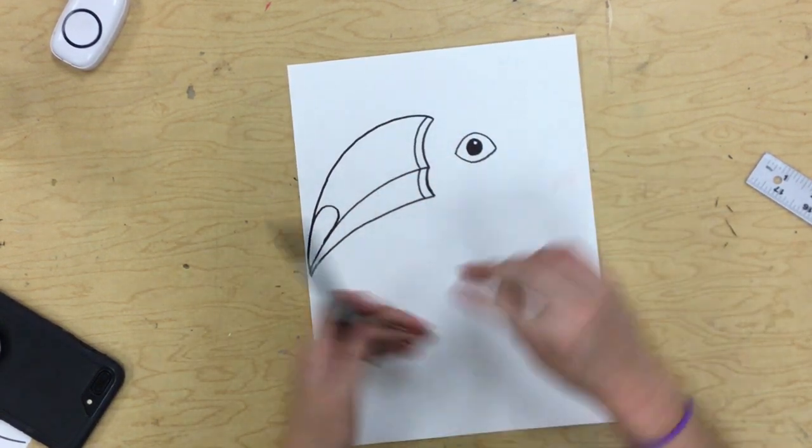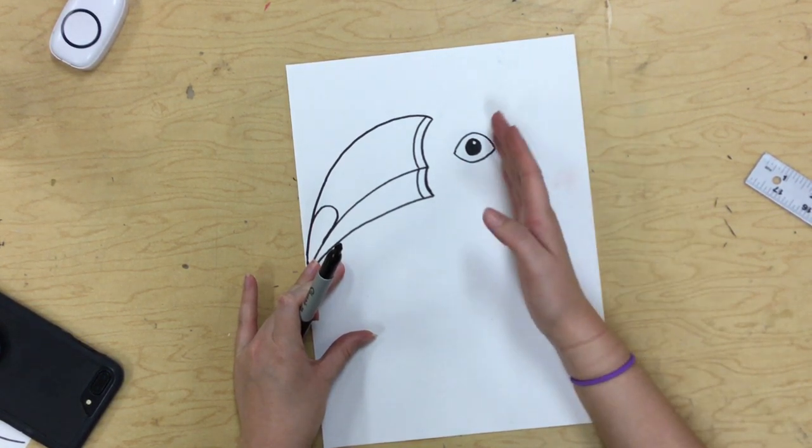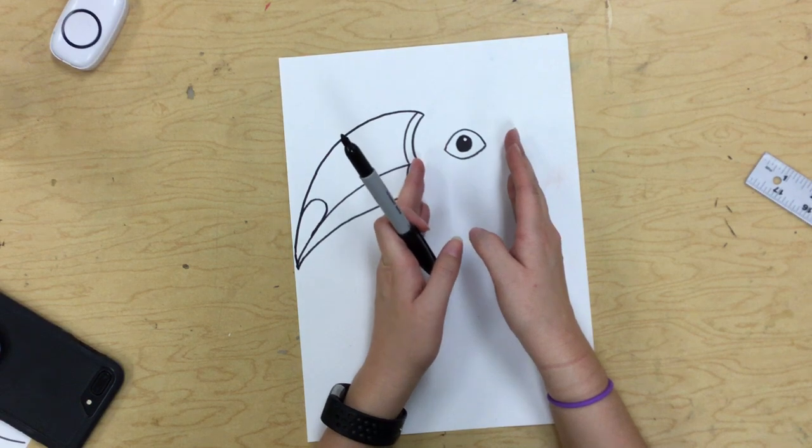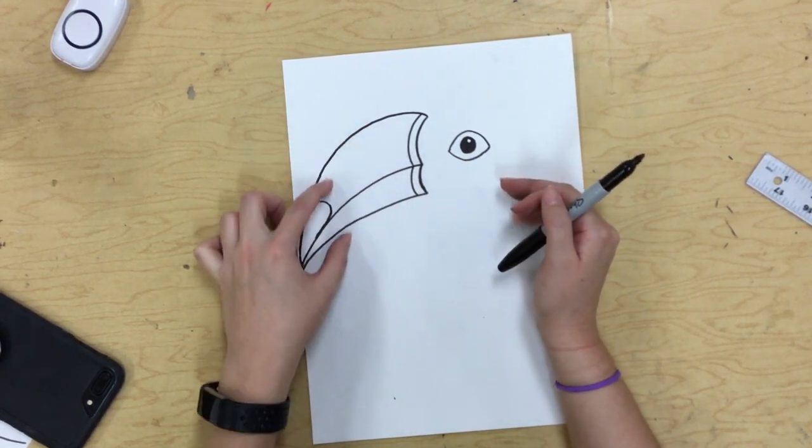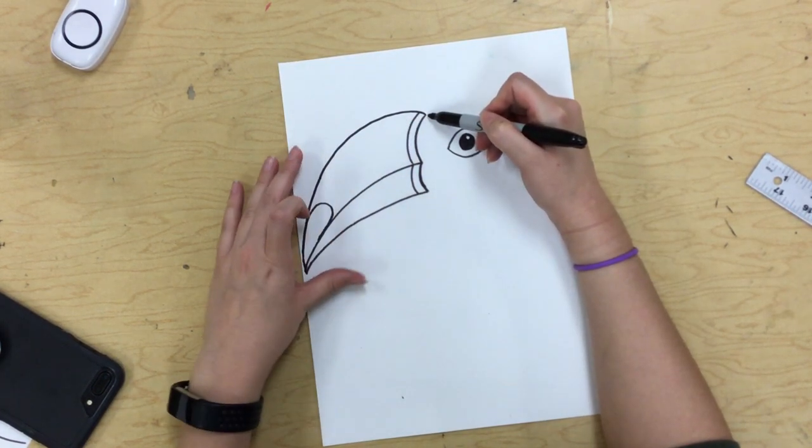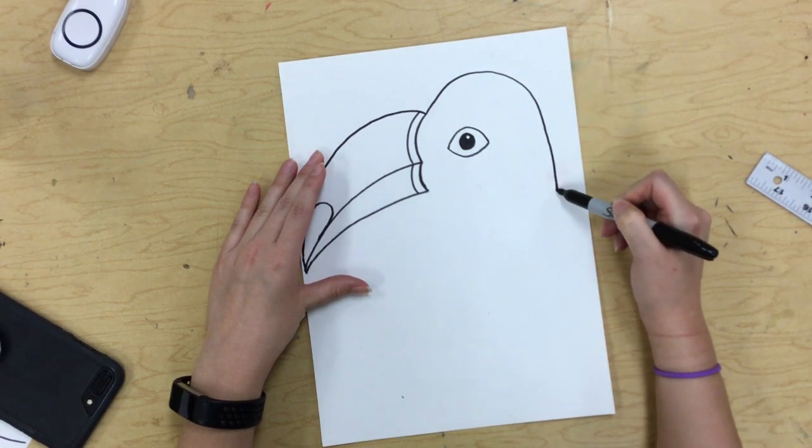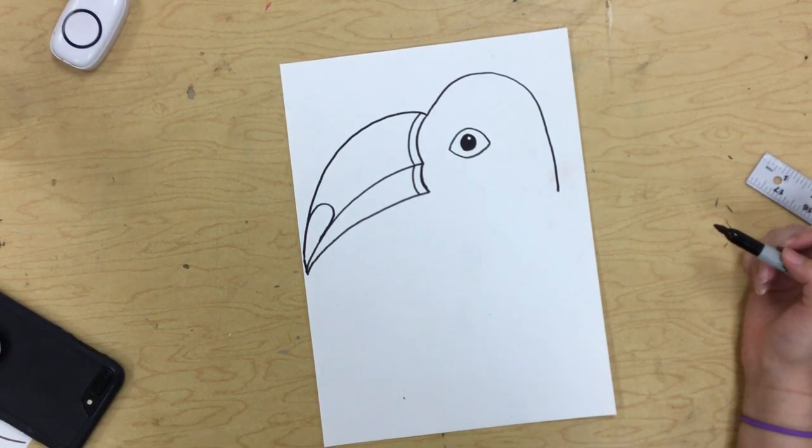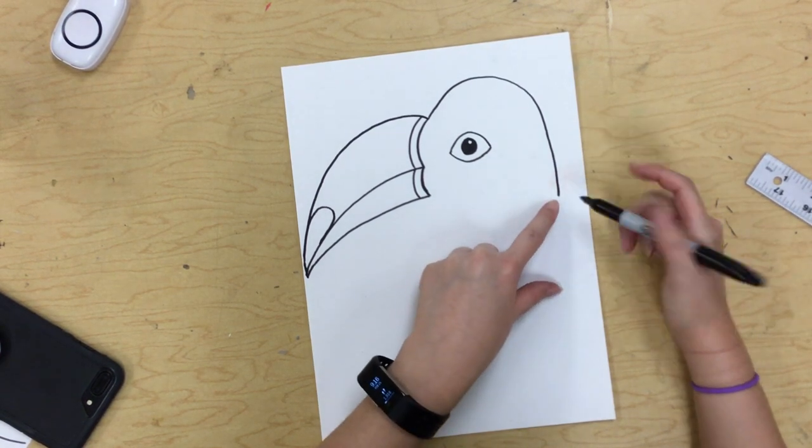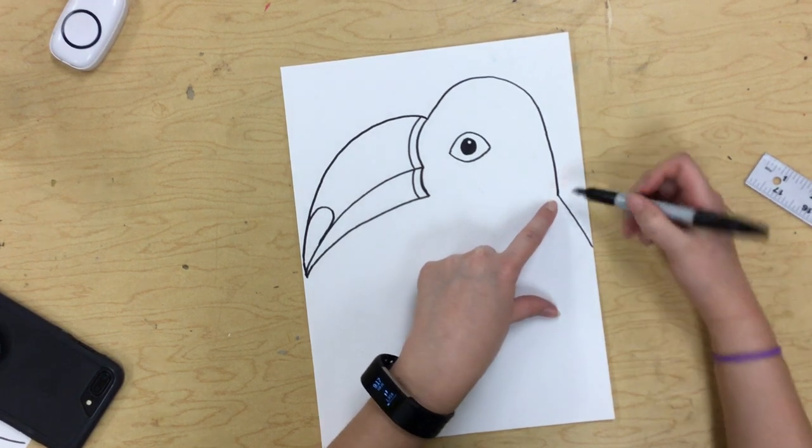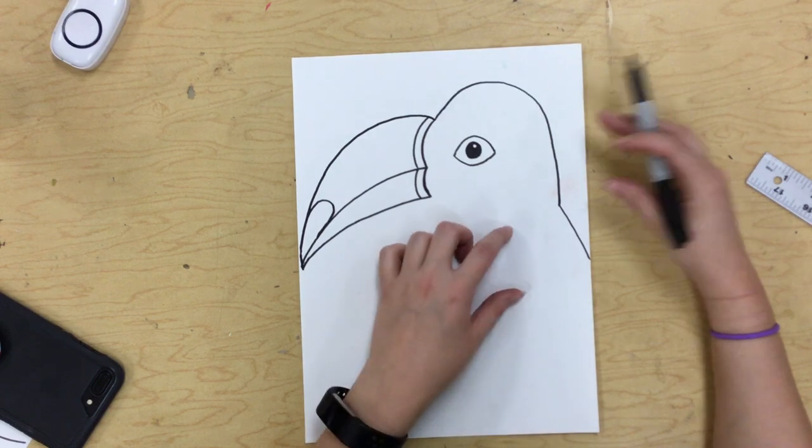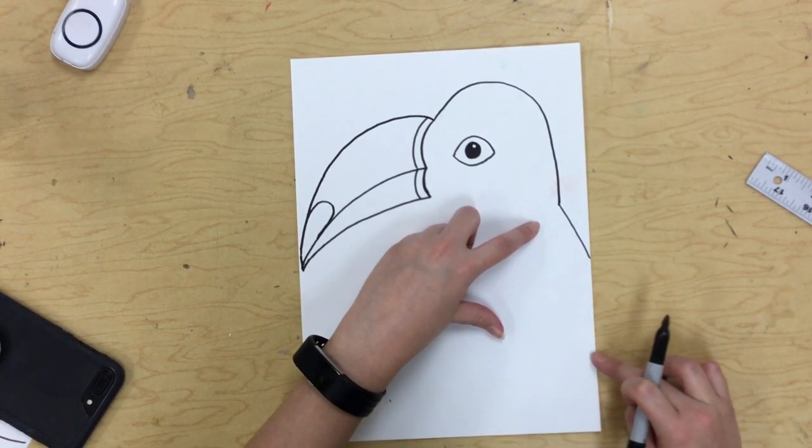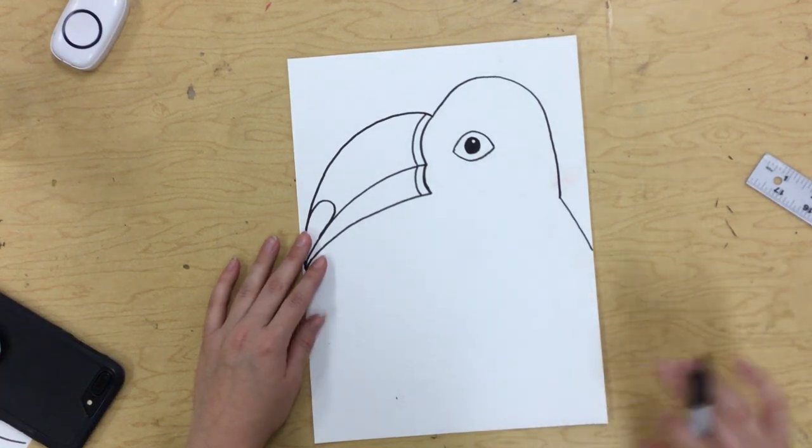All right, now we're going to make his head. So we want his head to come up and over his eyeball, but we don't want it to be too close to his eye. I've seen a couple people make it too close to the eye, and it looks like his head is super skinny. And for a toucan, their heads actually have to be pretty big to be able to hold up this huge beak, right? So you're going to start where your beak ends, and you're going to make a curved line that comes up and over like that. Then from that curved line, you're just going to kind of make it go off the edge of the page. So just kind of keep that in mind. Do whatever looks natural for your toucan.